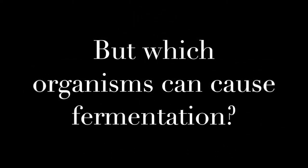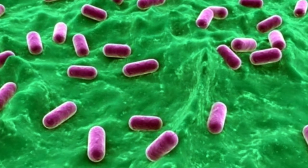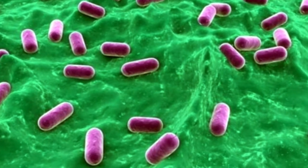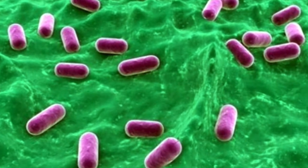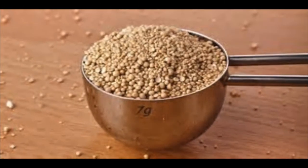Fermentation is a chemical reaction that can be accomplished through three different organisms: bacteria, yeasts, and molds. Bacterial fermentation allows the conversion of carbohydrates to lactic acid or carbohydrates to acetic acid. Yeasts are used to produce CO2 and ethanol, which allows bread to rise and creates the bubbles present in beers.